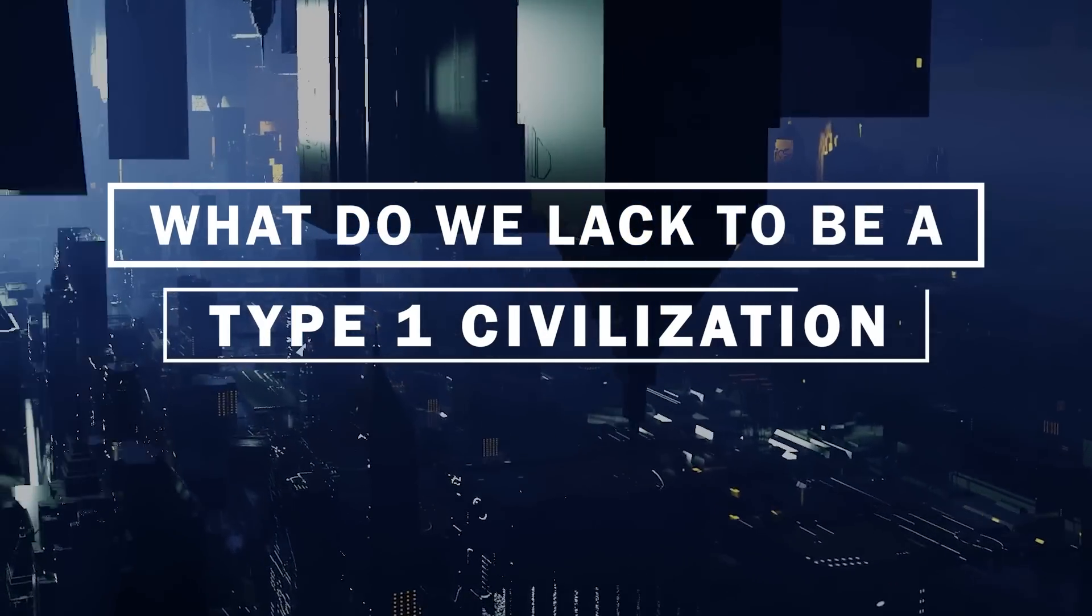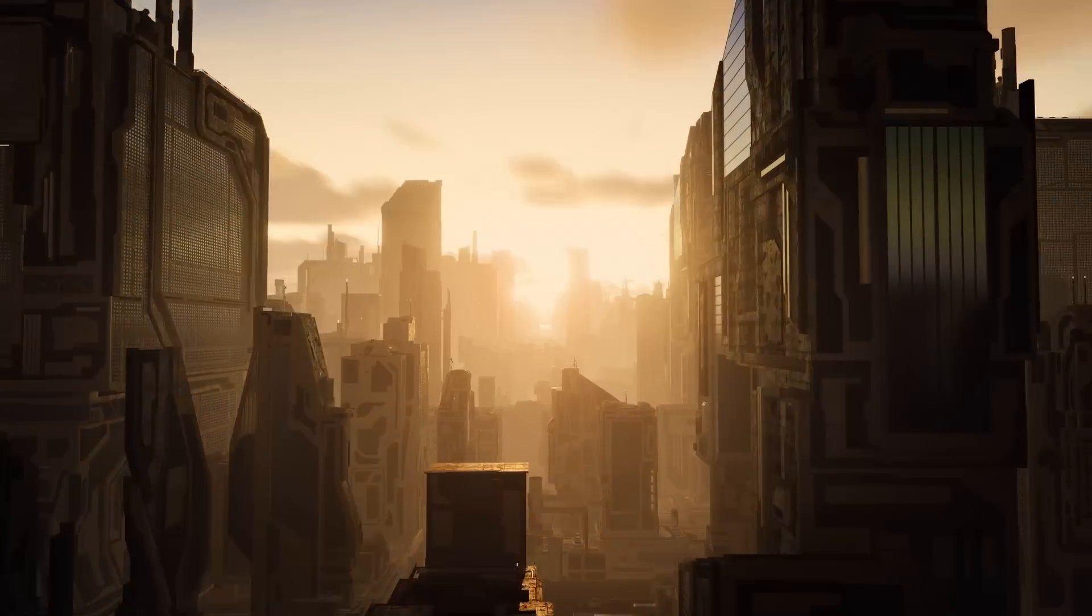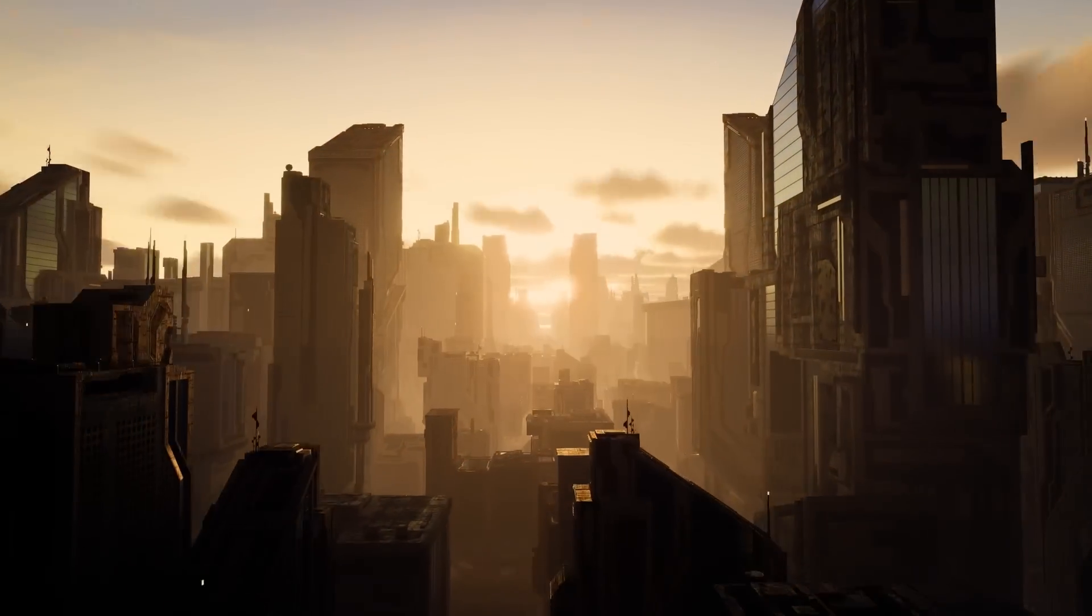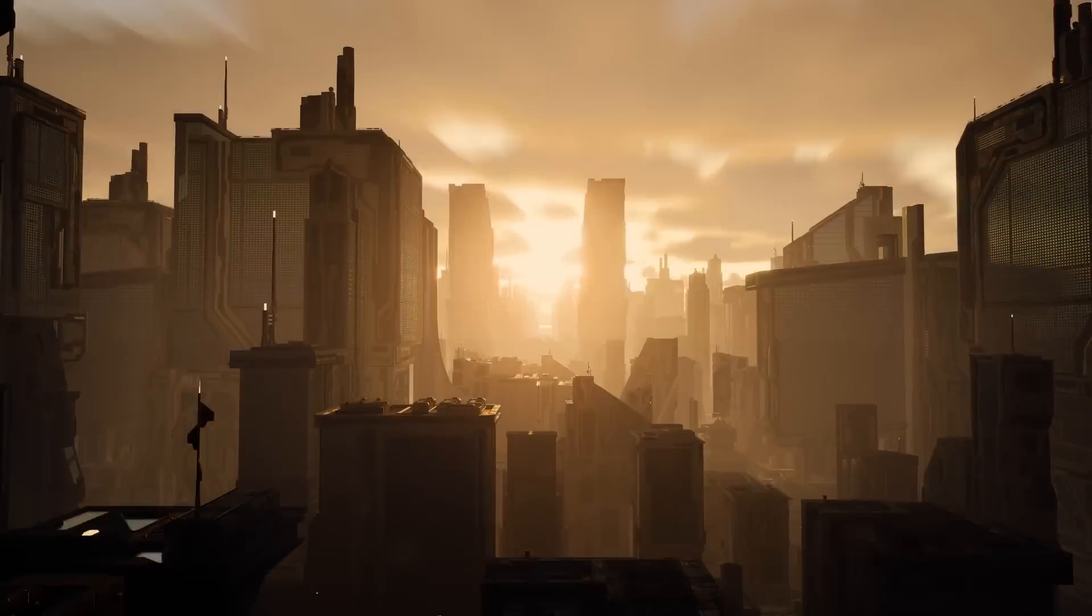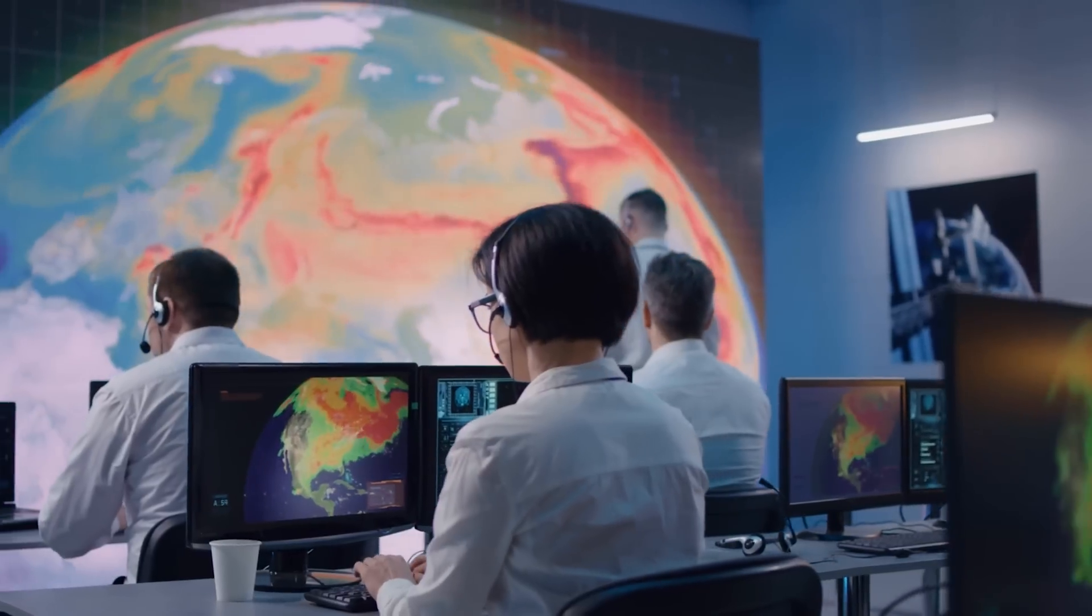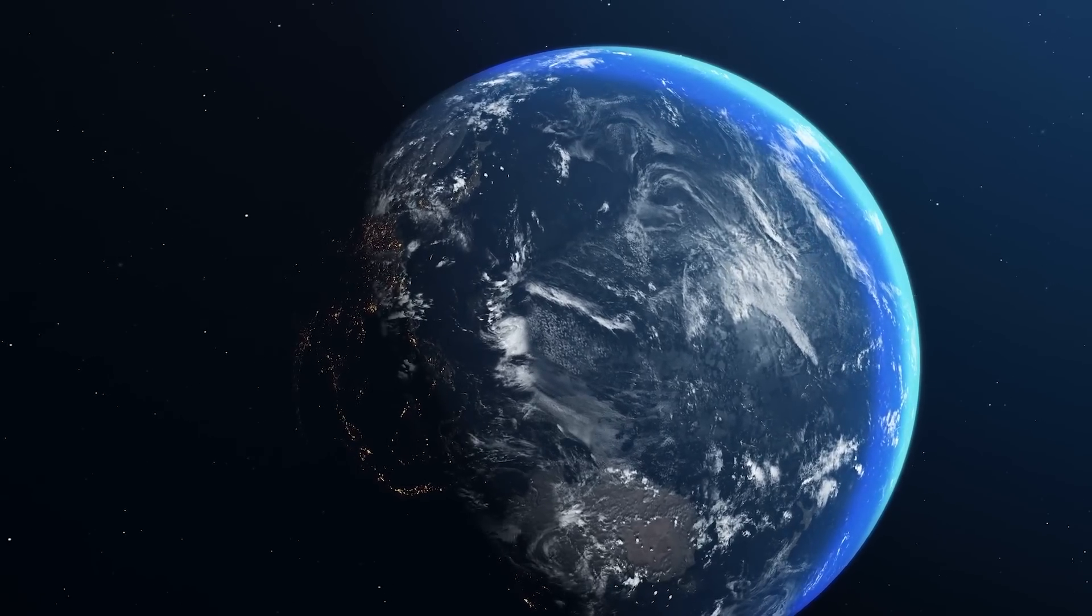What do we lack to be a Type 1 civilization on the Kardashev scale? A Type 1 civilization on the Kardashev scale manages to take advantage of 100% of the energy produced by its planet, control the climate, and even move continents and change its planet's rotation.